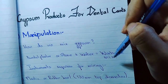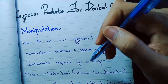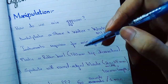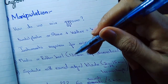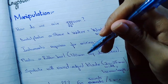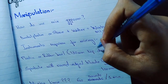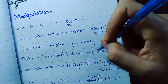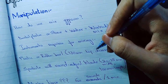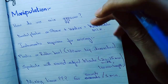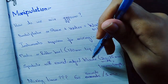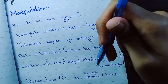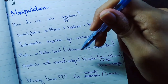Two instruments are required for mixing gypsum. Number one is a plastic or rubber bowl with a top diameter of 130 millimeters — not critical to memorize for exams, but important to know. Number two is a spatula with round-edged blades, 20 to 25 millimeters wide and 100 millimeters in length. I will show you pictures of these two instruments.